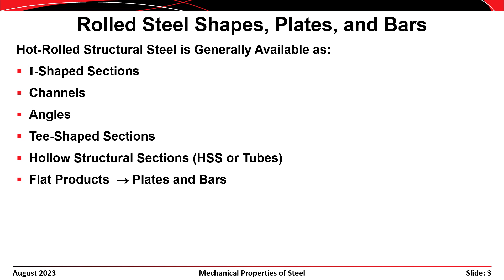The structural steel we use as engineers is available in a number of different cross sections, shapes, and sizes. Hot-rolled structural steel is available in I-shape sections, channels, angles, T-shape sections, hollow structural sections or tubes, and as flat products like plates and bars. We'll discuss each of these types over the next several slides in the first part of this presentation.